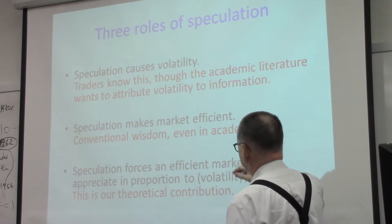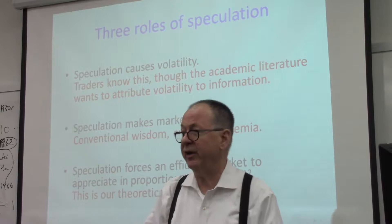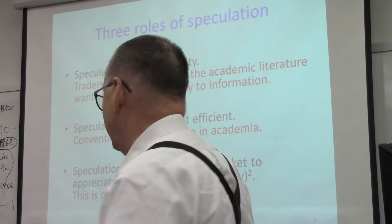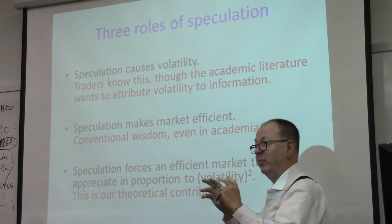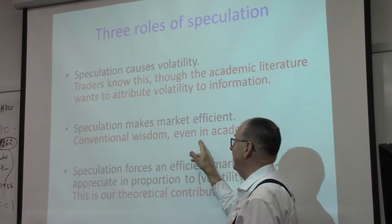There are three things: speculation causes volatility, speculation makes the market efficient, and speculation causes the market to go up. The fact that speculation causes volatility is no secret. The traders know this. You talk to the mathematicians in the math department who teach mathematical finance — they may deny it. But you talk to the people who are playing the game, they will tell you that the volatility is caused by speculation.